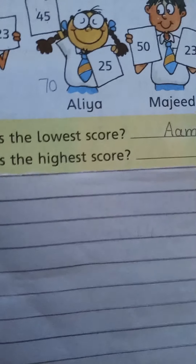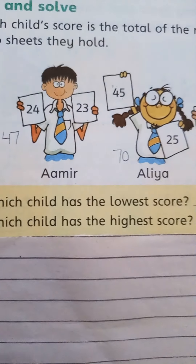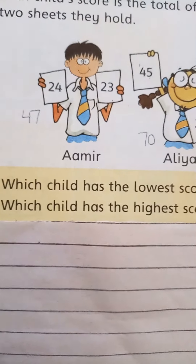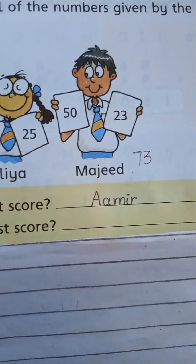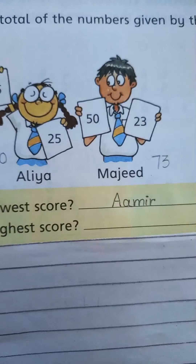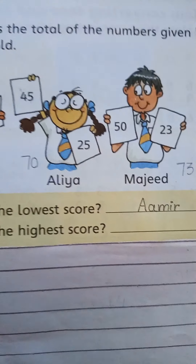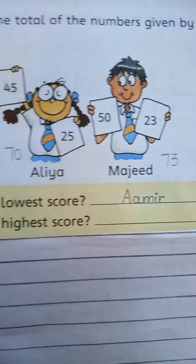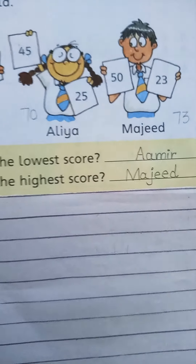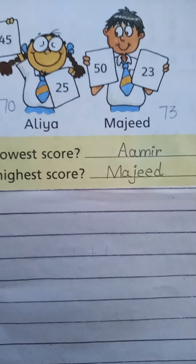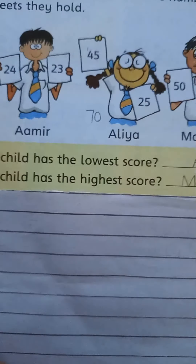Next is which child has the highest score? Students, tell me which child has the highest score. Amir has the lowest. Among Aliyah and Majeed — Aliyah has 70 while Majeed has 73. So Majeed has the highest score. We will write the name of Majeed for the second question.